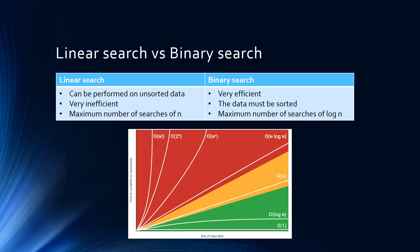The binary search has a time complexity of O(log n). For example, with a list of seven items: two to the power of two is four items — not enough; two to the power of three is eight items. That means any list with eight or fewer items has a maximum of three searches before the item is found or declared not in the list. With four searches we could cover up to 16 numbers, with five up to 32, with six up to 64 — and this pattern continues, showing that the power of the binary search increases the larger the list.